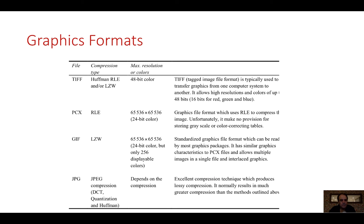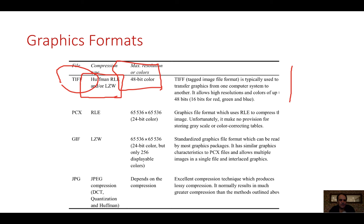Looking at some different formats: TIFF is used in high-quality graphics, giving us 48-bit color — even better than 24-bit. It's used in the publishing industry and can use Huffman or RLE compression, or LZW. It's 16 bits each for red, green, and blue, making it quite an efficient method.